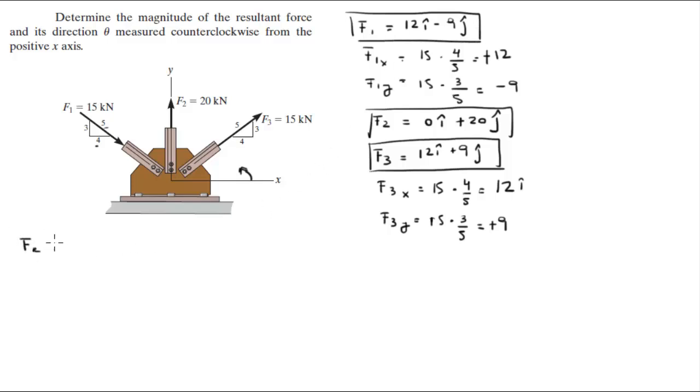So you can find the resultant force by simply adding the three forces, the x-components with the x-components and the y with the y. You're going to get that the resultant force is equal to 24i plus 20j.